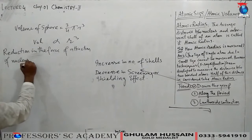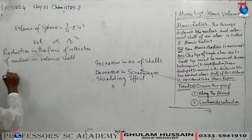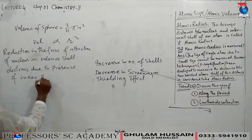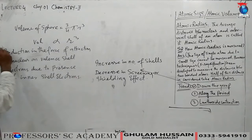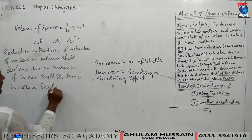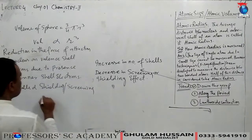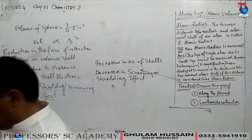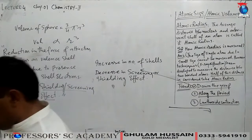The shielding or screening effect is the reduction of the attraction of the nucleus on valence shell electrons due to the presence of inner shell electrons. As the number of inner shells increases, the shielding effect increases, reducing the nucleus's pull on the outermost shell electrons, causing the shell to expand outward — so atomic size increases down a group.